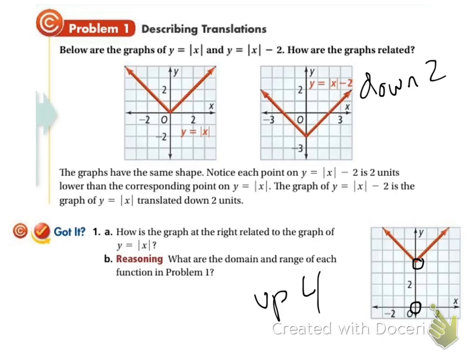Now when we're going to graph these equations, if it goes down, we're going to be subtracting. So this will be y equals the absolute value of x minus 2. When we're moving up and down, the adding and subtracting is on the outside of our absolute value function. So this one here, it went up 4. So this is going to be y equals the absolute value of x plus 4.